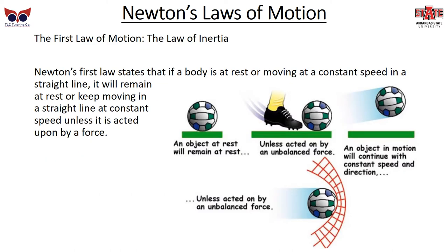The first law is called the law of inertia: if a body is at rest or moving at a constant speed in a straight line, it will keep doing what it's doing unless acted upon by a force. A soccer ball sitting there won't do anything unless a foot kicks it. If you kicked that ball in a vacuum — in space — it would go forever until it hit the net, which creates a force to stop it. In general: an object at rest remains at rest, and an object in motion continues at constant speed and direction, unless acted upon by an unbalanced force.